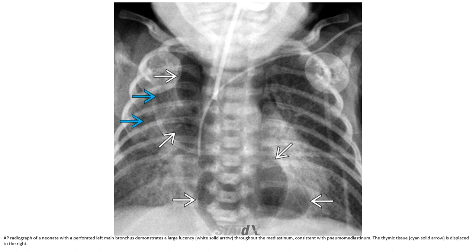AP radiograph of a neonate with a malpositioned left main bronchus tip demonstrates a large gas collection throughout the mediastinum, consistent with pneumomediastinum. The thymus tissue is displaced to the upper heart border.